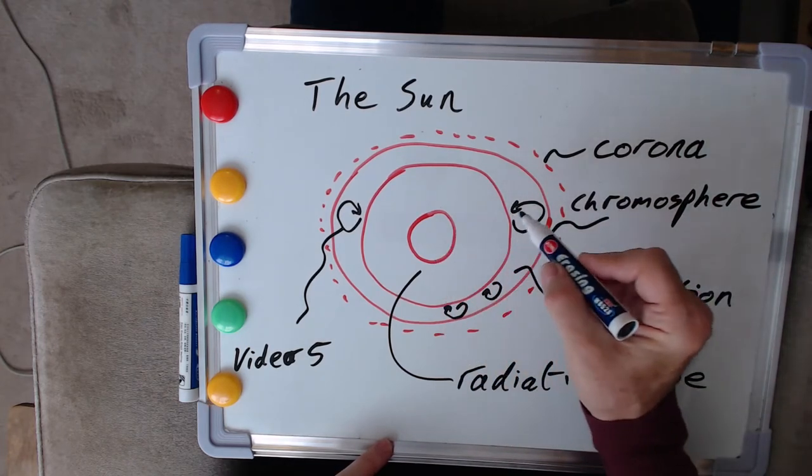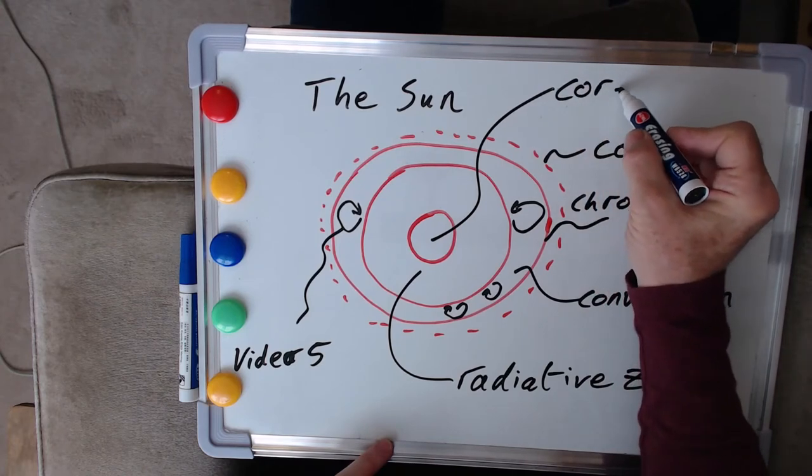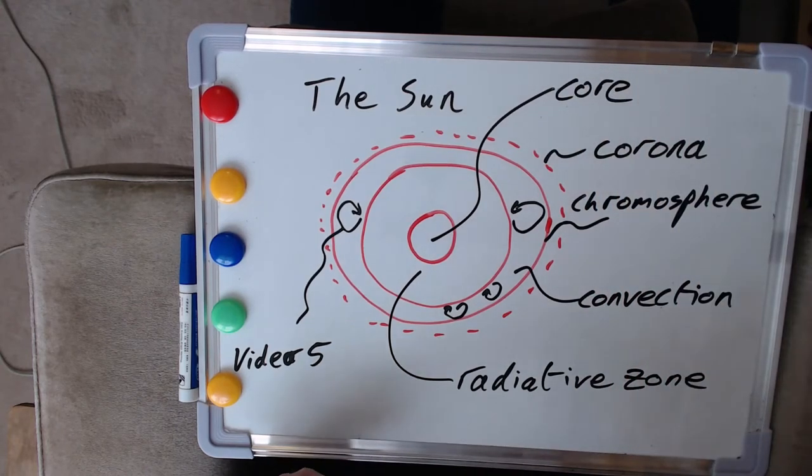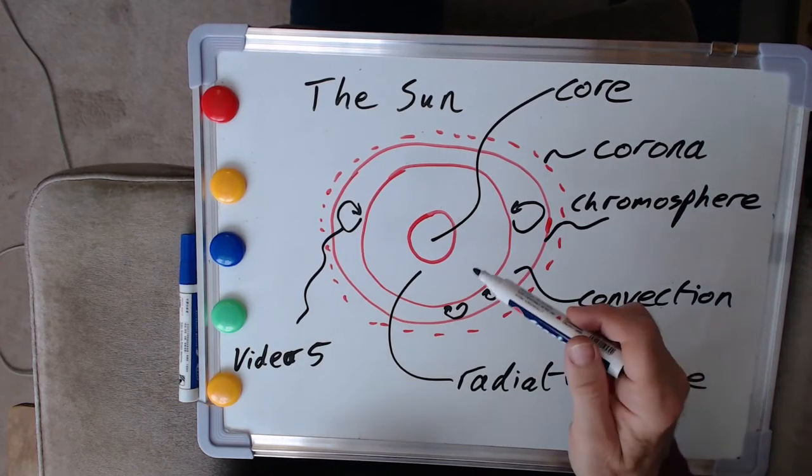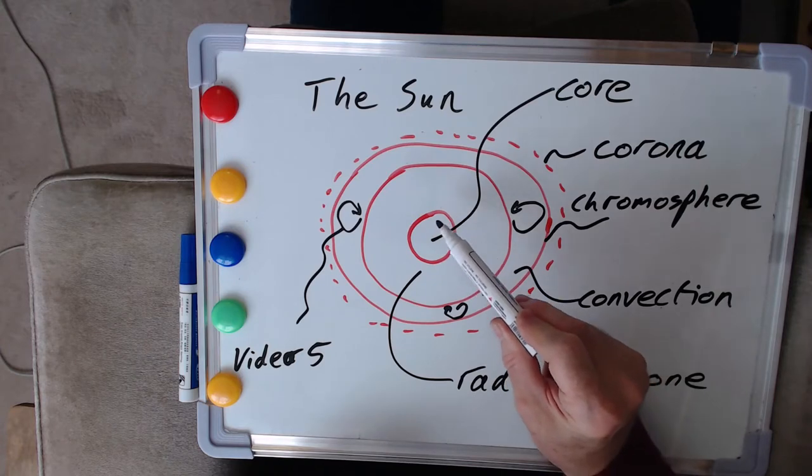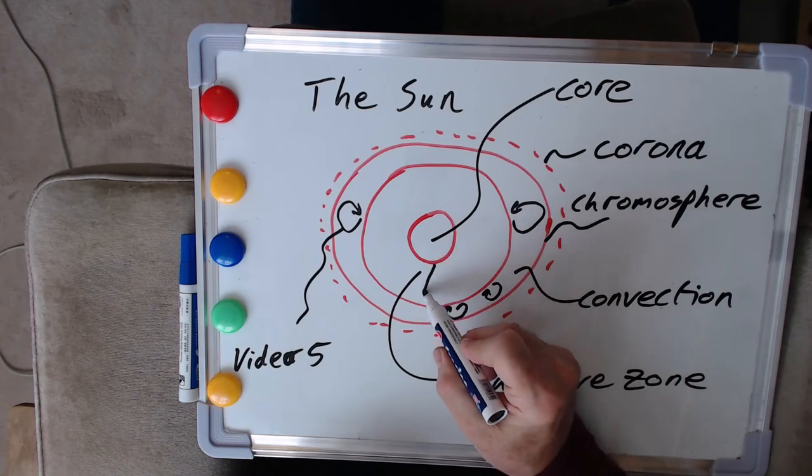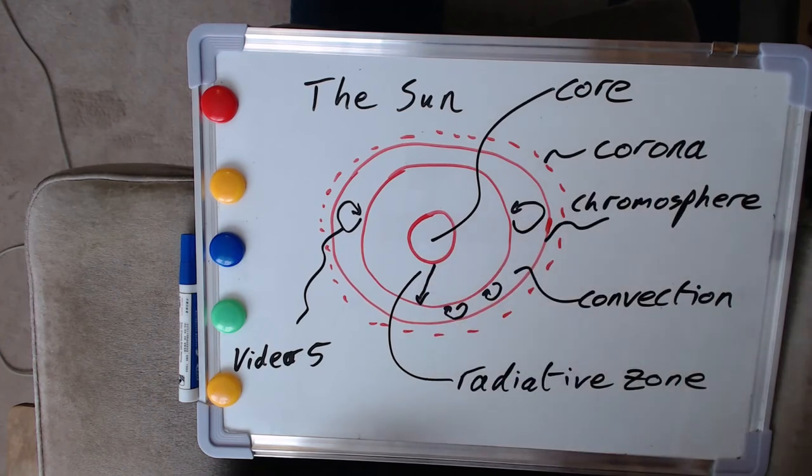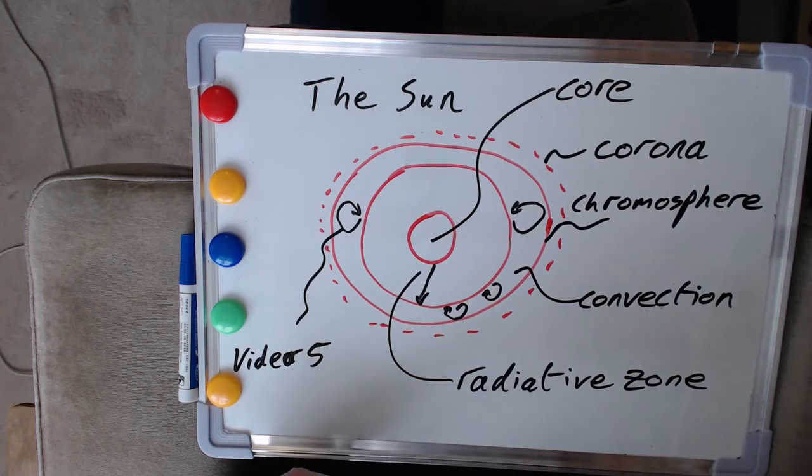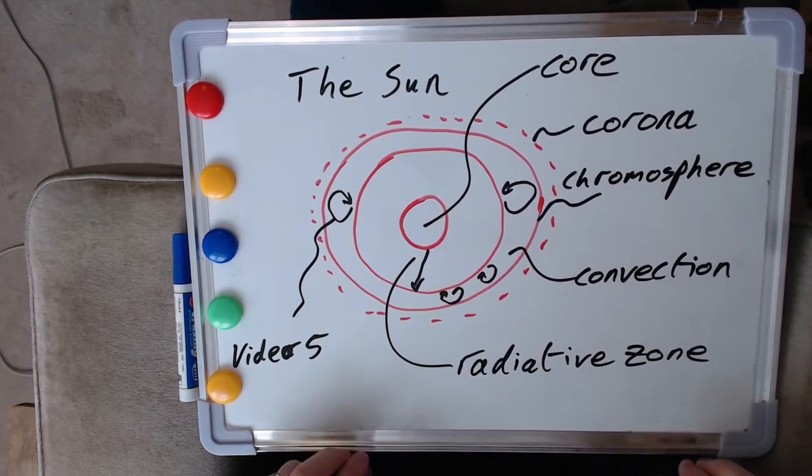Further down in, we have something called the radiative zone. And then right slap bang in the middle, as I said earlier, is the core where all the energetic stuff happens. You might be surprised to know that the energy from this core, from the thermonuclear reactions, takes more than a hundred thousand years to get through this radiative zone to the convection zone on the outside. That's because the energy, mostly in the form of photons, light, is getting bounced around so much that it actually takes that long to get out.